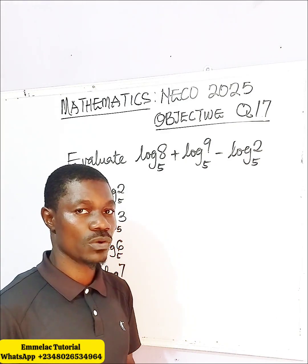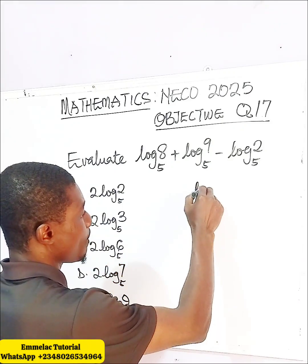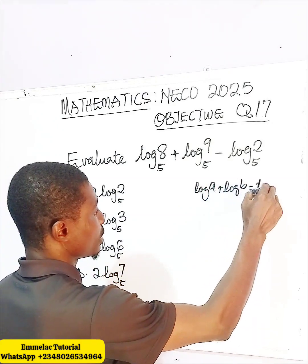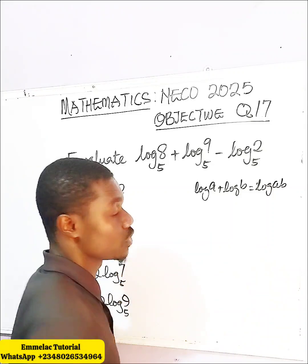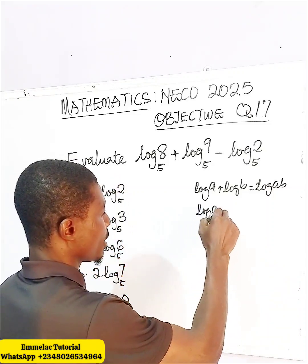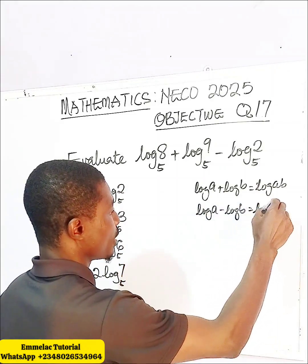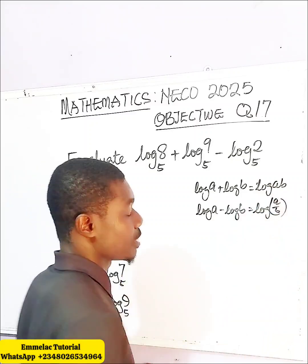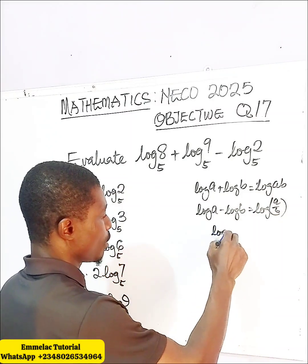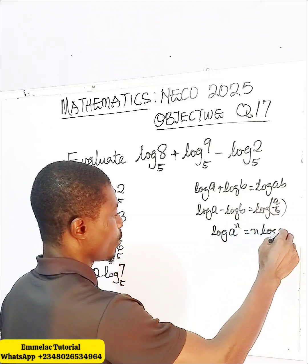Let us recall the logarithmic formulas. If you have log A plus log B, this is the same as log AB — meaning you multiply. Log A minus log B gives us log A over B, meaning you divide. And if you have log A to the power of N, that is the same as N log A.